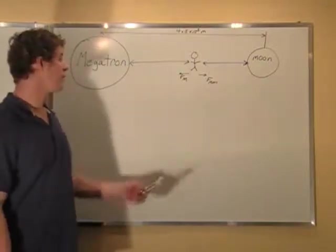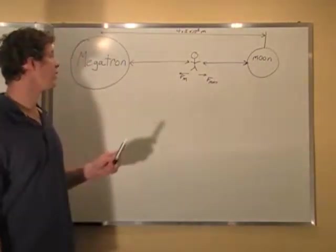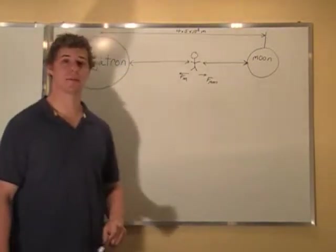In this problem, we have a moon orbiting the planet Megatron, and it's at a distance of 4.5 times 10 to the 8 meters away.